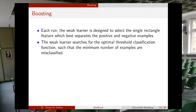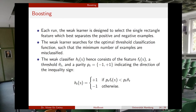The weak learner searches for the optimal threshold classification function — the one that minimizes misclassifications. The weak classifier H consists of a feature F of X, a threshold theta, and a parity P. This parity is a number that can be minus one or plus one.